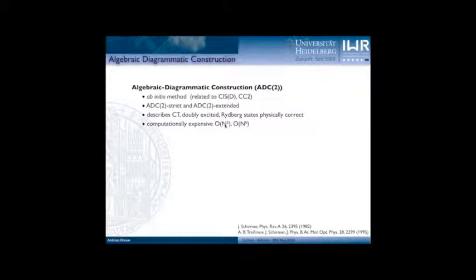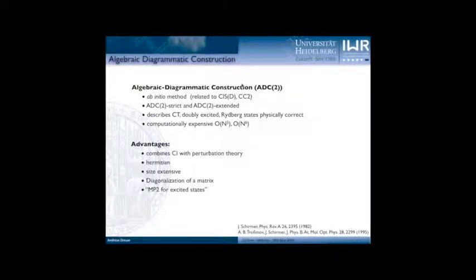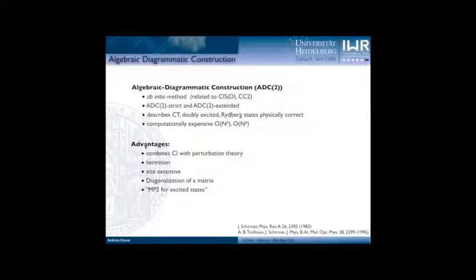However, there's no free lunch — ADC2 scales rather unfavorably compared to density functional theory. The strict version of ADC2 scales as N to the power of 5 with N being the number of basis functions, and the extended one even with N to the power of 6. However, ADC2 offers really good advantages. Since it combines configuration interaction ideas with perturbation theory, it is a Hermitian method so we only need to solve for one eigenvector, and it's size-extensive like coupled cluster. Solving the ADC equation comes down to diagonalization of a matrix, and ADC2 is the real MP2 for excited states, as it is defined with respect to the Møller-Plesset ground state.